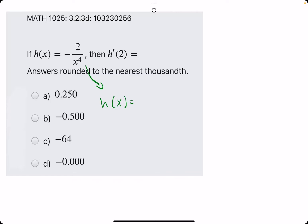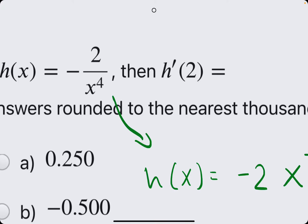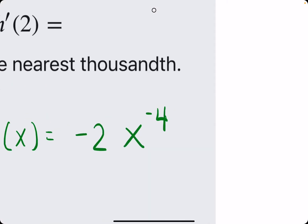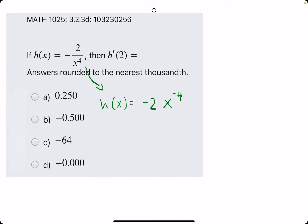So I would recommend rewriting it so it's something of the form negative 2 - we can keep that negative, we keep that 2, but bringing the x to the numerator. So rewriting it as x to some value if originally it's x to the fourth in the denominator. It would be negative 2x to the negative 4. That's the purpose of negative exponents - if it's positive 4 on the bottom, then bringing it out of the denominator will make it x to the negative 4.